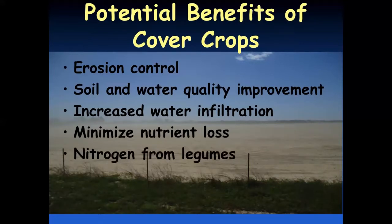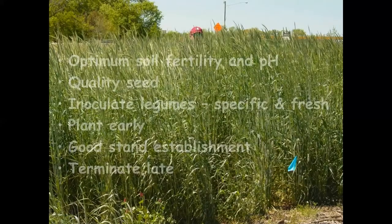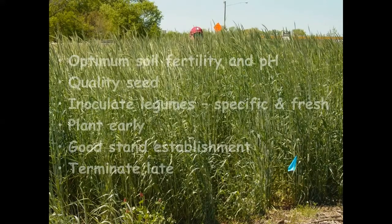Nitrogen, if you have legumes out there, can supply free nitrogen to the next crop. But in order to really get advantage of these cover crops, we need to optimize the conditions and maximize their growth. Start with optimum soil fertility and pH, just like you would any row crop — quality seed, inoculating any legumes with fresh, live rhizobium inoculant. Plant as early as possible to take advantage of warm fall weather, ensure good stand establishment, and terminate as late as possible while still being able to establish your cash crop on time.